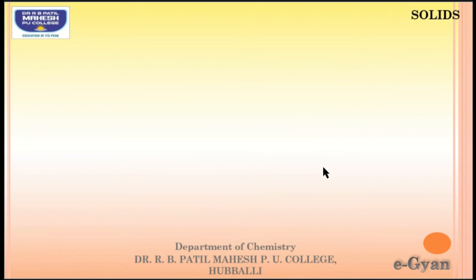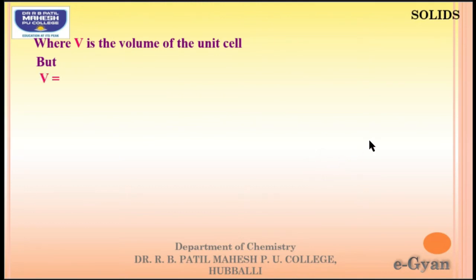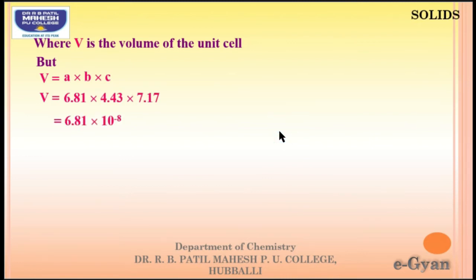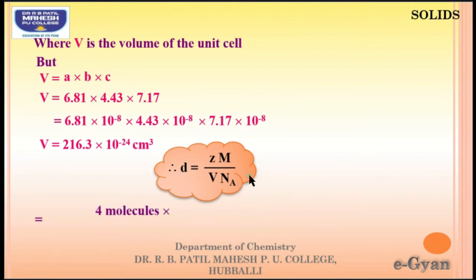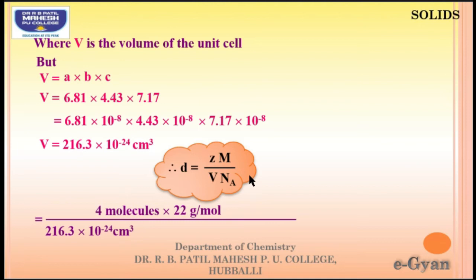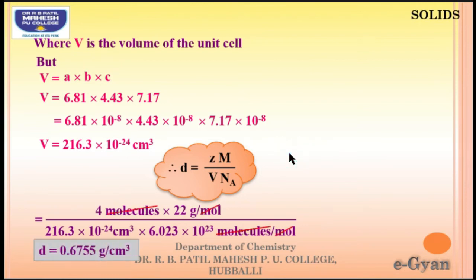Avogadro's number = 6.022 × 10²³. Since three edge lengths are given, volume V = A × B × C = (6.81 × 10⁻⁸) × (4.43 × 10⁻⁸) × (7.17 × 10⁻⁸) = 216.3 × 10⁻²⁴ cm³. Substituting into density = ZM / (V × Nₐ): 4 × 22 / (216.3 × 10⁻²⁴ × 6.023 × 10²³). The answer is 0.6755 g/cm³.